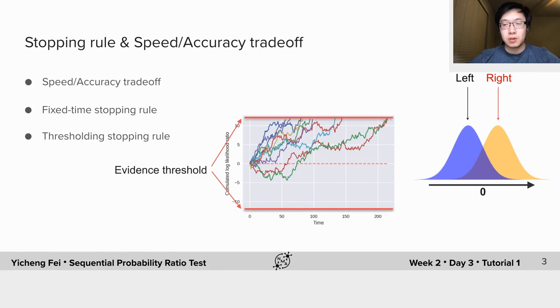The speed accuracy trade-off is similar here. You could either make an accurate and slow decision, or make a less accurate and fast decision.